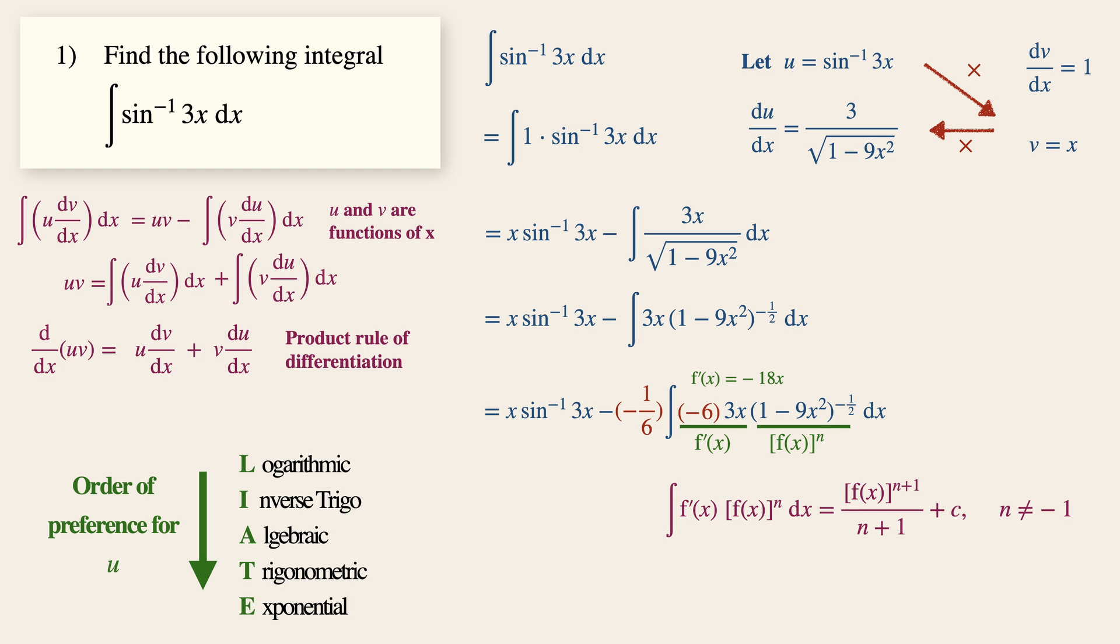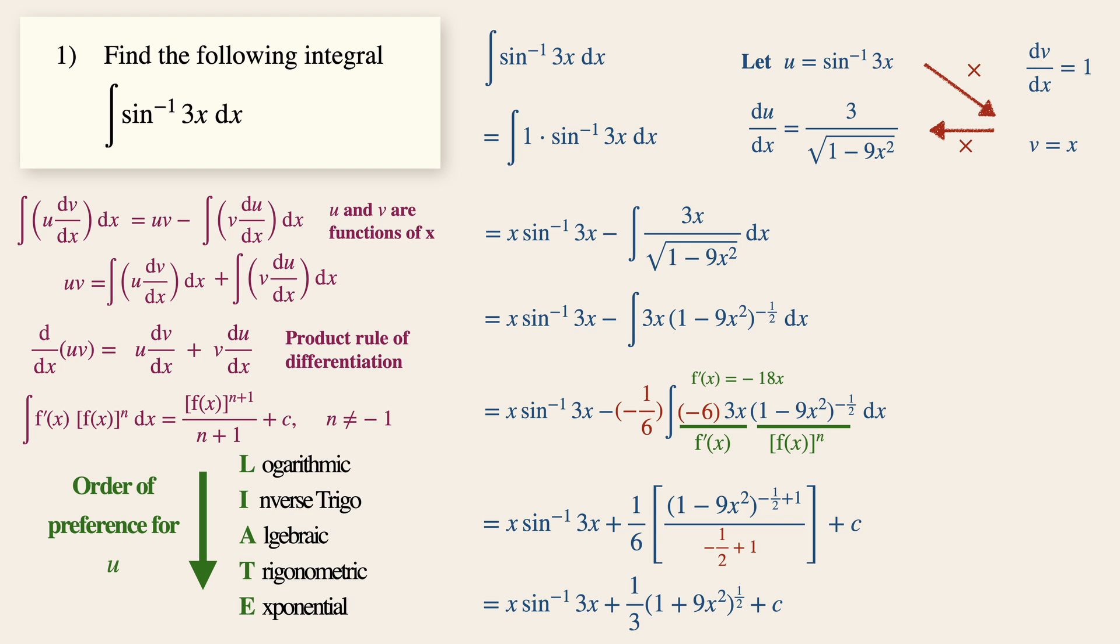With this format in place, we can then remove the integral sign and add a 1 to the power and divide it with that same power. By simplifying further, we will have x sin inverse 3x plus 1 over 3 times 1 plus 9x squared to the power half. Remember to add an arbitrary constant plus c. This will be our final answer.